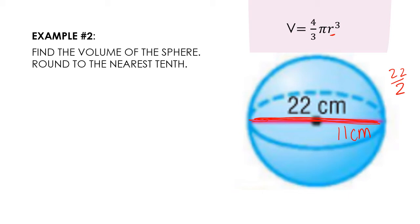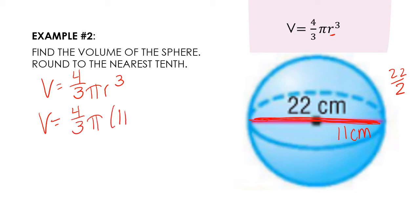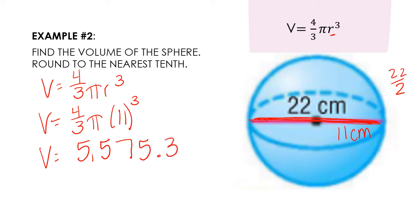I'm going to do the same exact thing that I did on example one. I'm going to write down my formula: volume equals four-thirds pi r cubed. I'm going to substitute my radius value into my r — so I have four-thirds pi, 11 to the third power. Using your calculator, type: 4 abc 3, pi, parentheses 11, close parentheses, carrot key to the third. You should get an answer of 5,575.3 centimeters cubed.